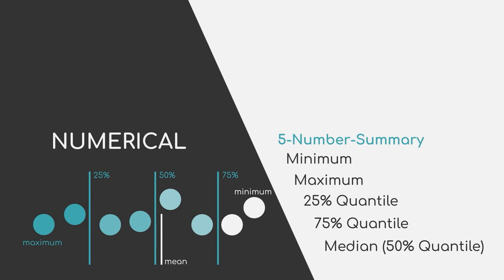In addition to the 5-number summary, people usually also calculate the mean and standard deviation of the dataset. Looking at the difference between mean and median can provide information on potential outliers, because outliers with very big or small values can distort the arithmetic mean quite a lot. Together with the standard deviation, which provides information on the statistical error margin of your data points, you can also gain insights on the distribution of your data.